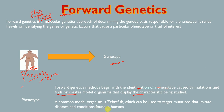To summarize: forward genetics goes from phenotype to genotype, and reverse genetics goes from genotype to phenotype. I hope this video was helpful. Please like and share the video and subscribe to our channel to support us. Thank you.